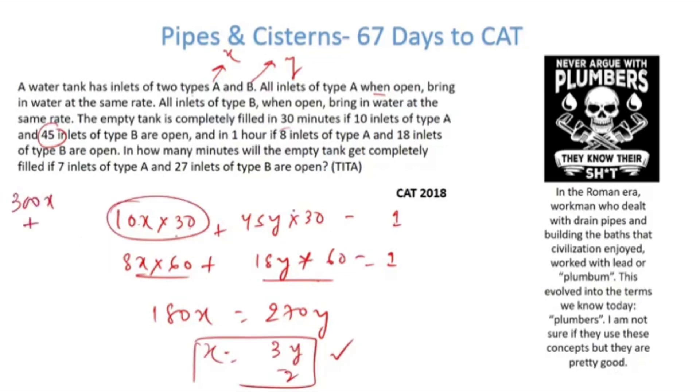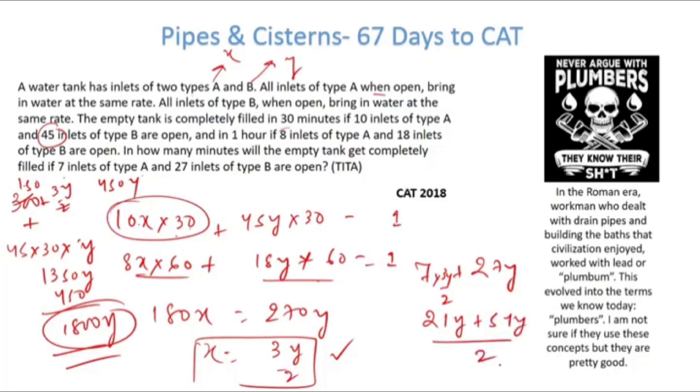This is 300x plus 45y times 30, so 45 times 30, if I just put in place of x I put 3y/2, this becomes 1800y. If 7 inlets of type A, so 7x and 27y. So if I have 7x that becomes times 3y/2, 21y plus 54y/2. And total is 1800y. This if you divide becomes 75y/2, and I have a 2 here. So 25, 3 times, and 18, 25, 4 times. So then I have this 6 times. So 2 times 6 times 4 is 48.